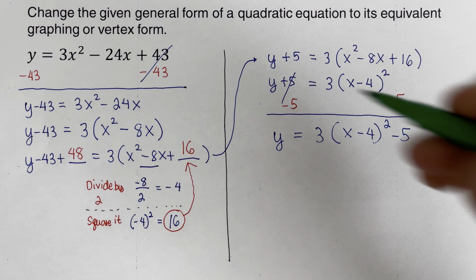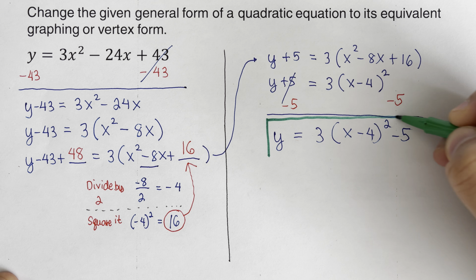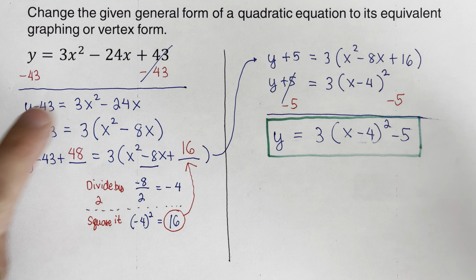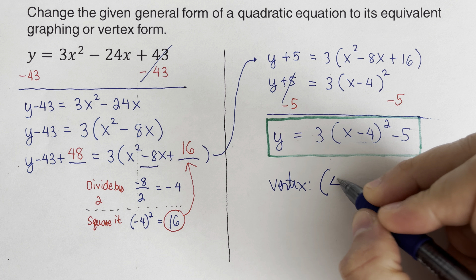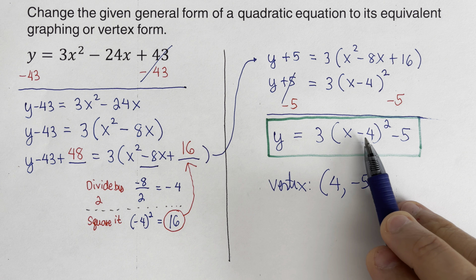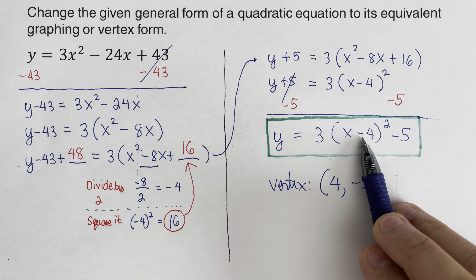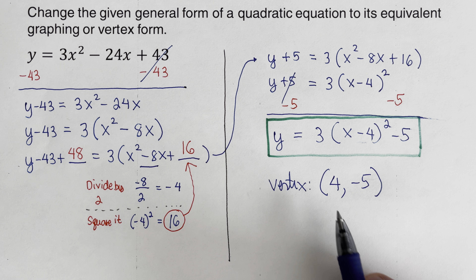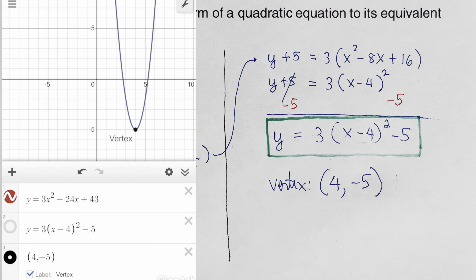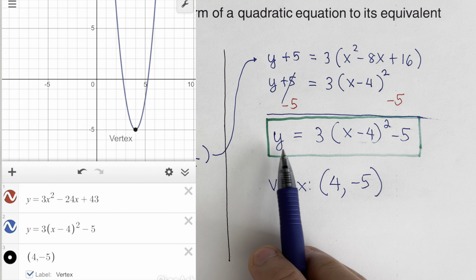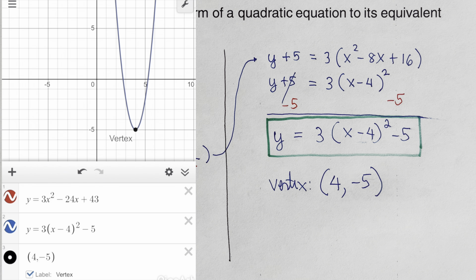This is the equivalent vertex form or graphing form of the equation. The vertex is (4, negative 5) — we switch the sign of negative 4 to get positive 4, and keep negative 5. On the side you can see both graphs are identical, confirming the two forms are equivalent.